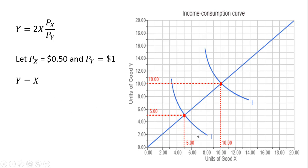For example, one bundle is (5, 5) and another is (10, 10). At the bundle (5, 5), the consumer spends $0.50 times 5 units, which is $2.50 on good x, and $1 times 5 units, which is $5 on good y. Together, this consumption bundle implies an income of $7.50, and we can back into the income at other levels similarly.